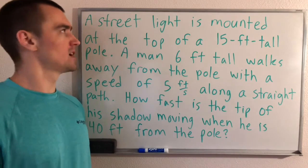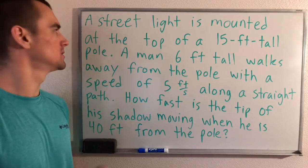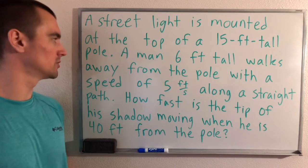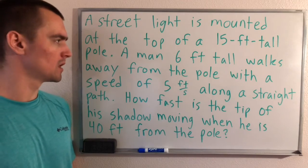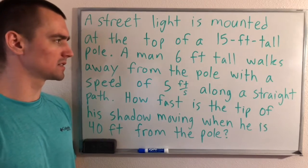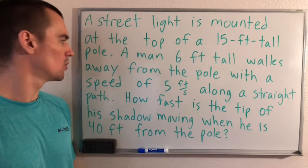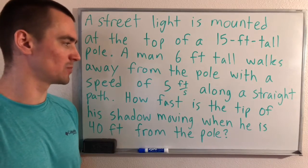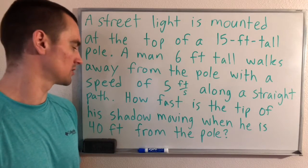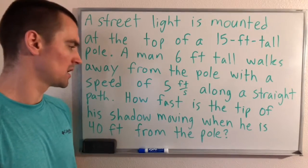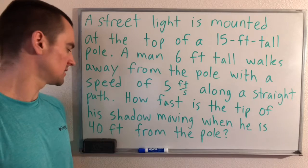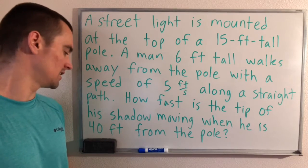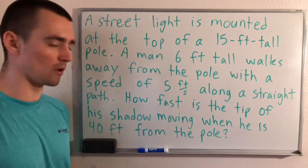The problem we have is: a street light is mounted at the top of a 15-foot tall pole. A man 6 feet tall walks away from the pole with a speed of 5 feet per second along a straight path. How fast is the tip of his shadow moving when he is 40 feet from the pole?